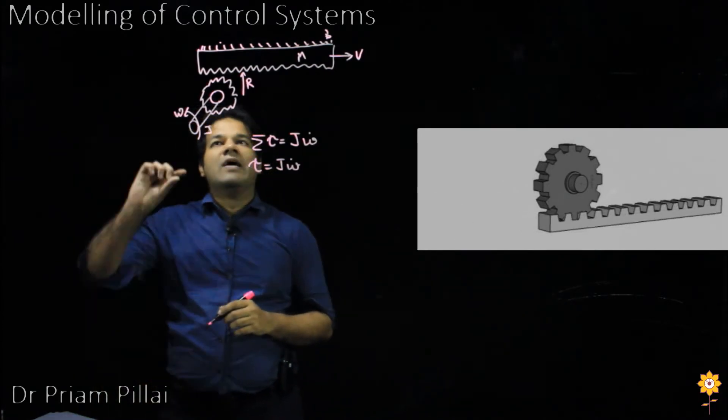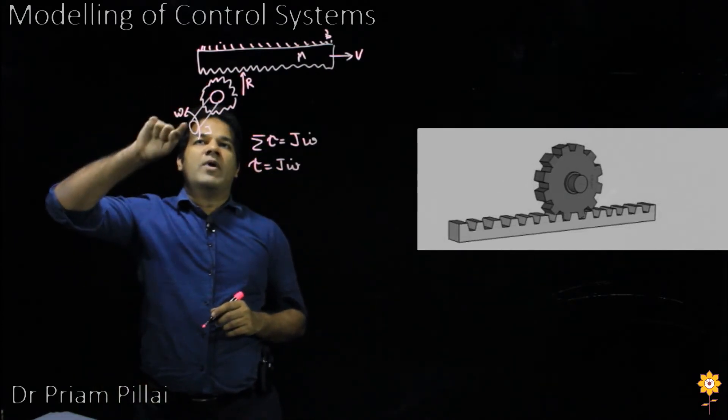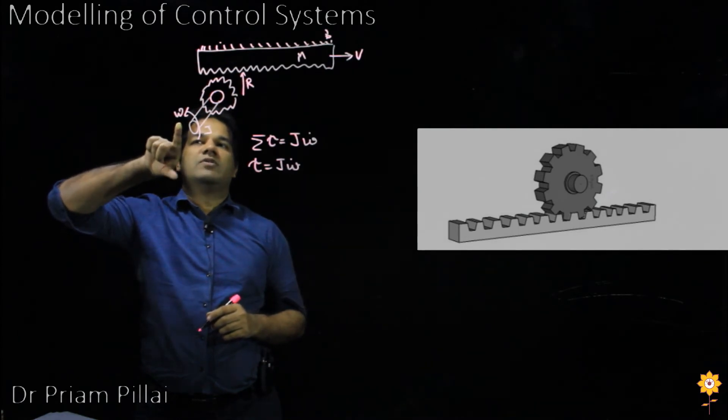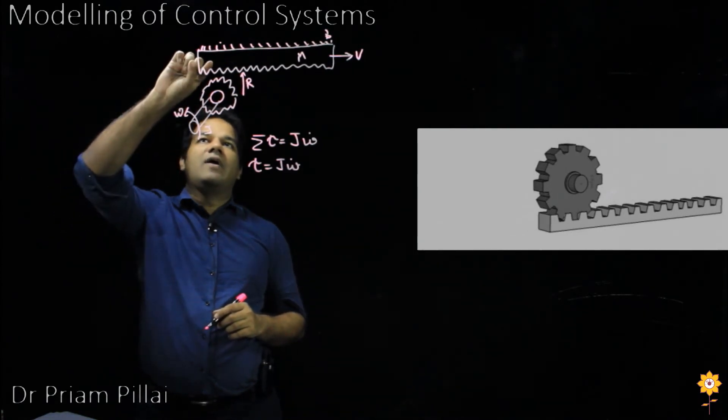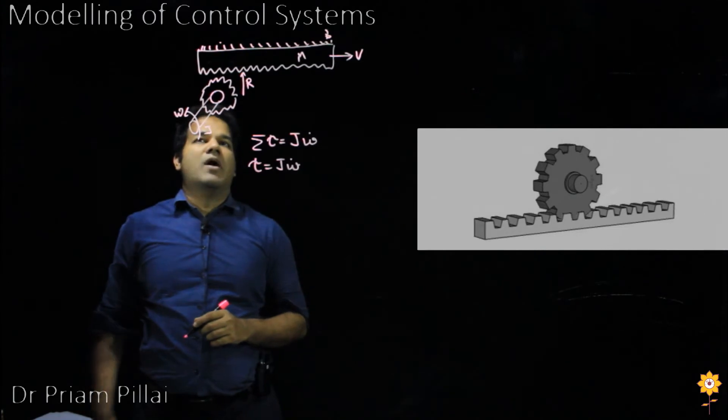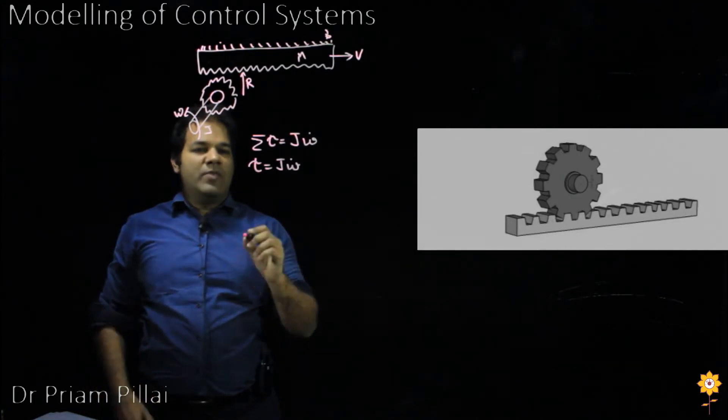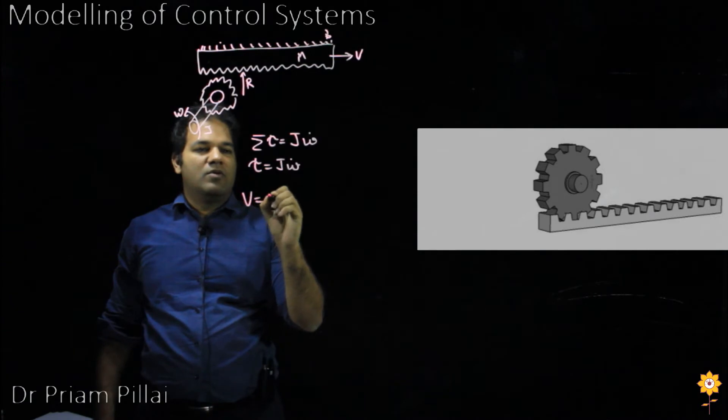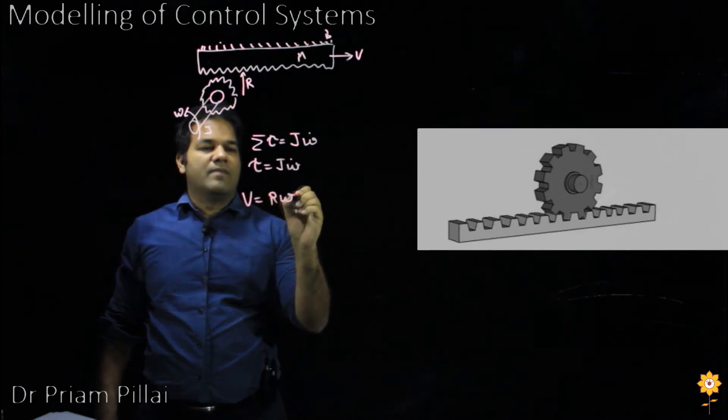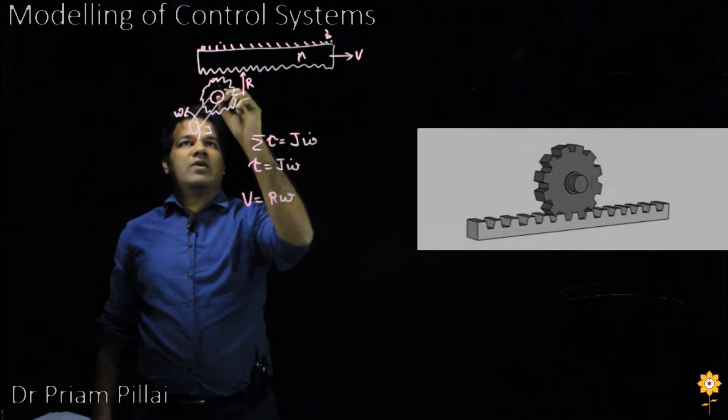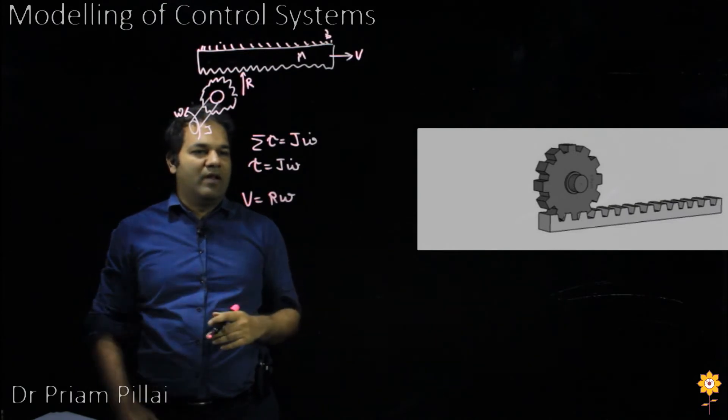What is the relationship between the omega, the angular velocity of this shaft, and the velocity of that mass? It will simply be given by the velocity equals R omega, if we assume that this is perfectly rotating without any slipping or anything like that.